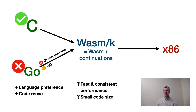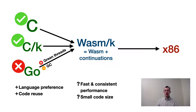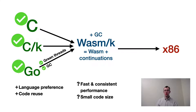We solve this problem by introducing WASM-K, our extension to WebAssembly, which adds support for limited continuations. In addition, we prototype a language CK, which is C extended with continuations, as well as a compiler from CK to WASM-K. Using embedded green threads in CK as an example, we show that green threads can be compiled to efficient WASM-K code. Combined with the garbage collection extension to WebAssembly, we look forward to efficient compilation of Go in the future.